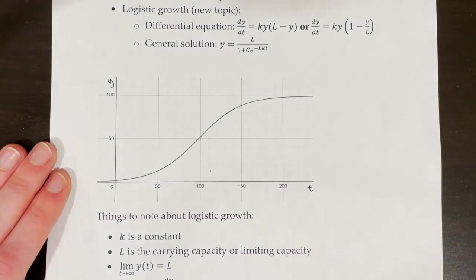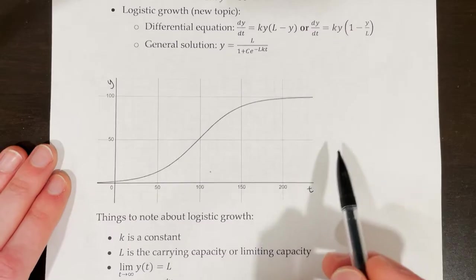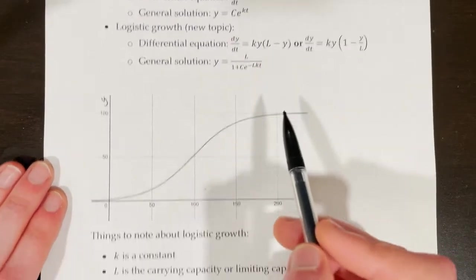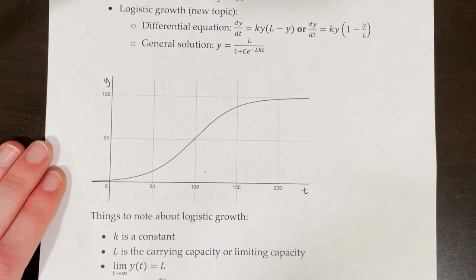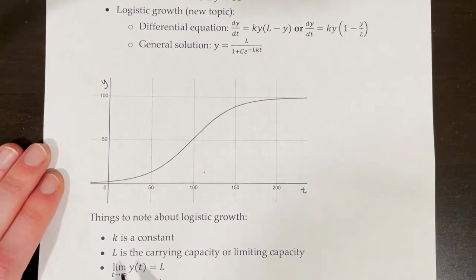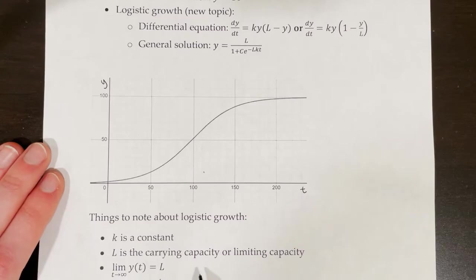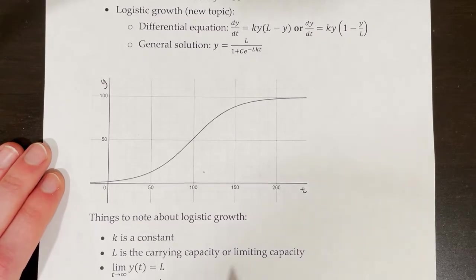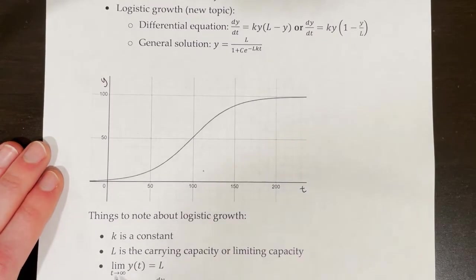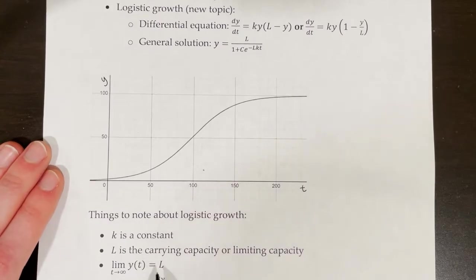A couple of things to note about logistic growth: k is a constant, just like in exponential growth. L is the carrying capacity, also called the limiting capacity — those two terms are interchangeable. The limit as t approaches infinity of y(t) is equal to L, that carrying capacity.